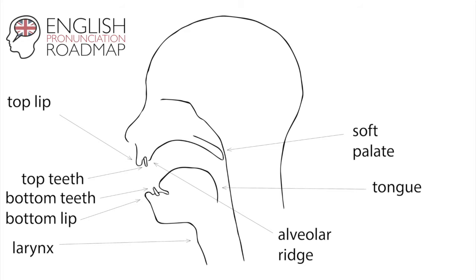Your jaw. But have you ever heard of the alveolar ridge? Some call it the gum ridge. A good alveolar ridge definition is that it's the little bumpy ridge about half a centimetre behind the back of your top front teeth. If you take the tip of your tongue and stroke the area behind your top teeth and then slide it backwards slowly, you should feel a little bumpy ridge. That's your alveolar ridge.